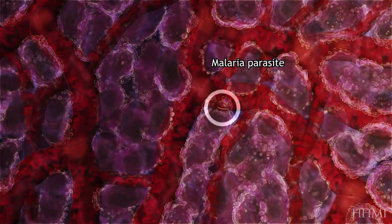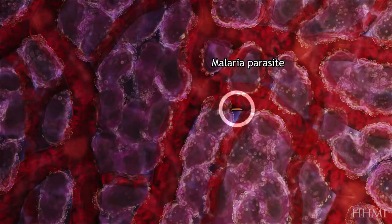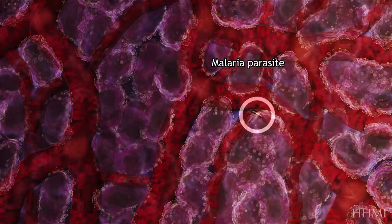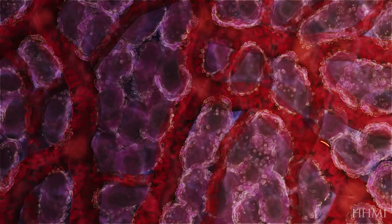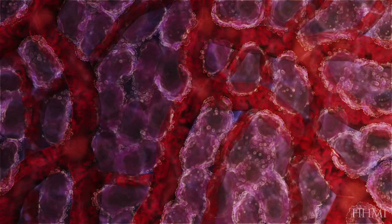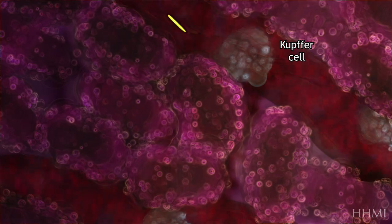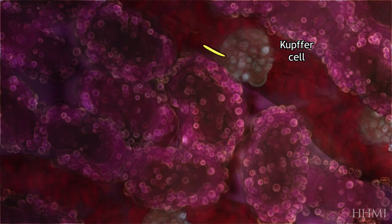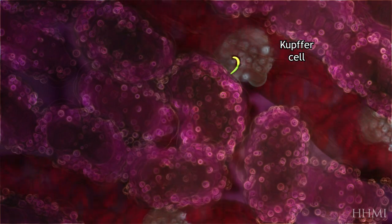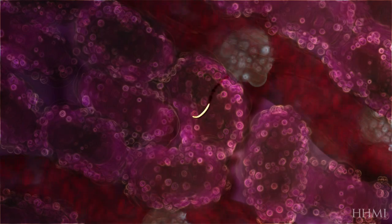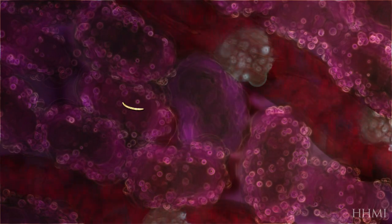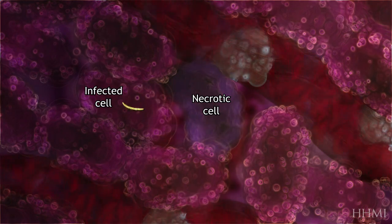Sensing its arrival at the liver, the parasite searches for an exit. A sentinel kupfer cell is the entry point to liver tissue. Leaving the blood, the parasite infects a liver cell, killing one or more other cells on its way.